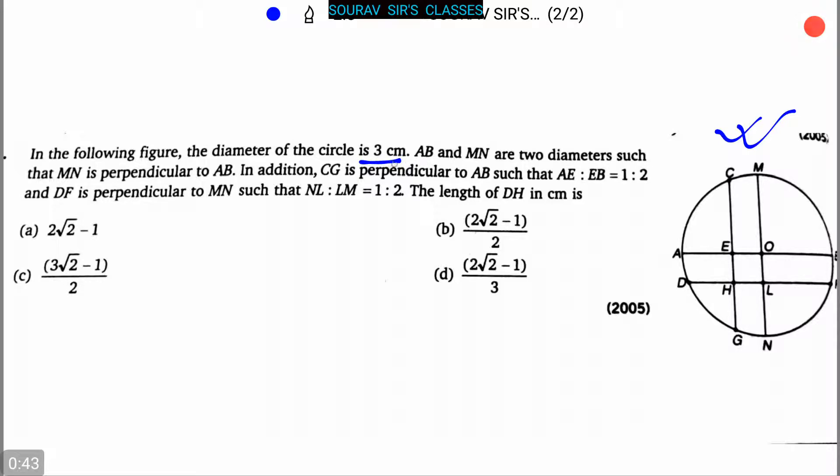It's given that the diameter of the circle is 3 cm. AB and MN are 2 diameters, AB which is this one and MN, this one, are 2 diameters such that MN is perpendicular to AB.